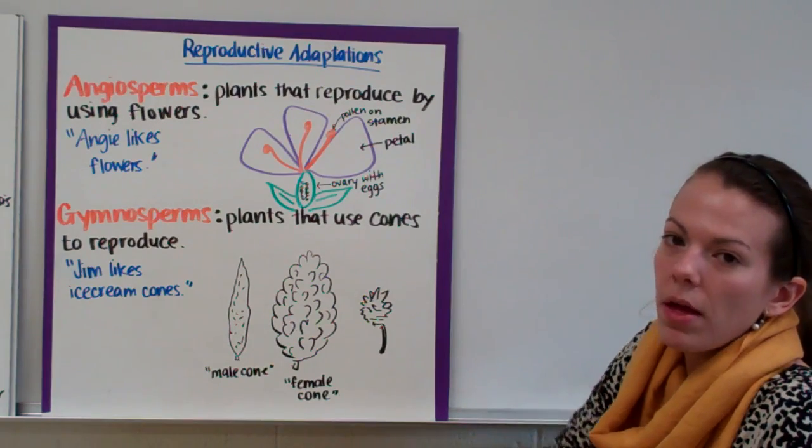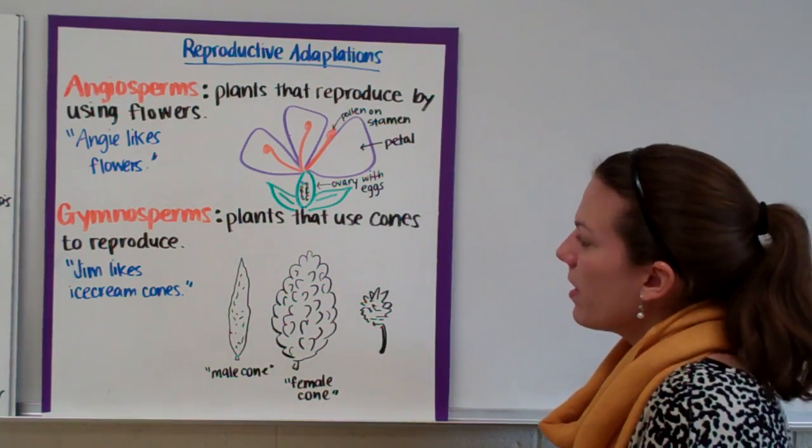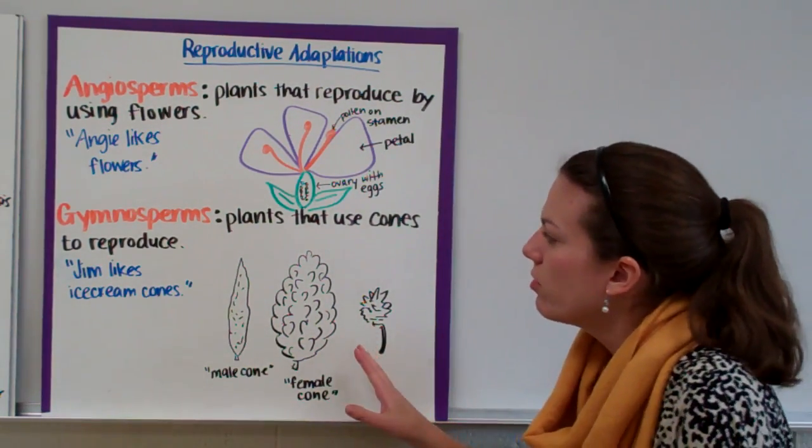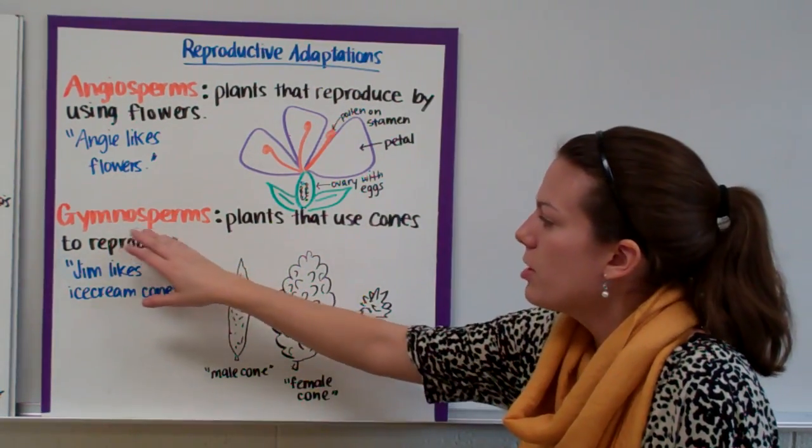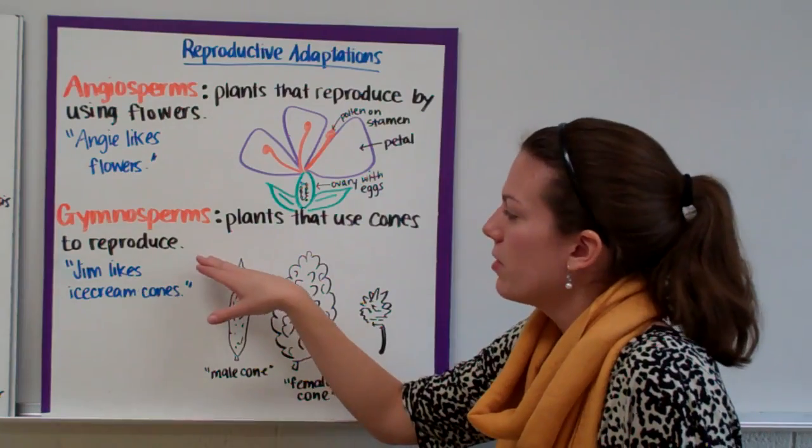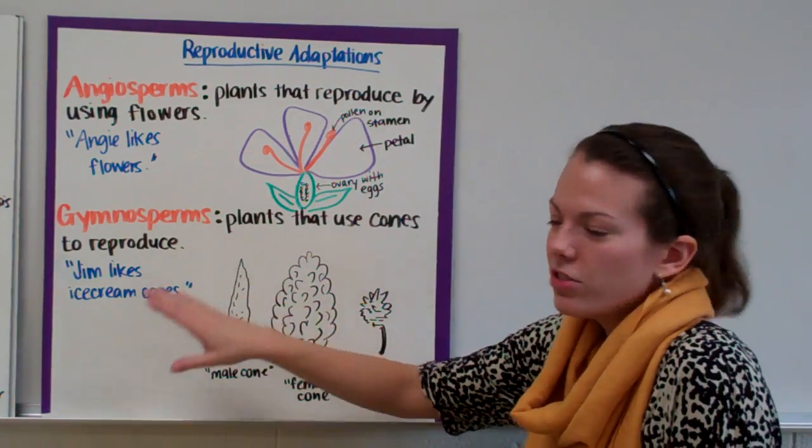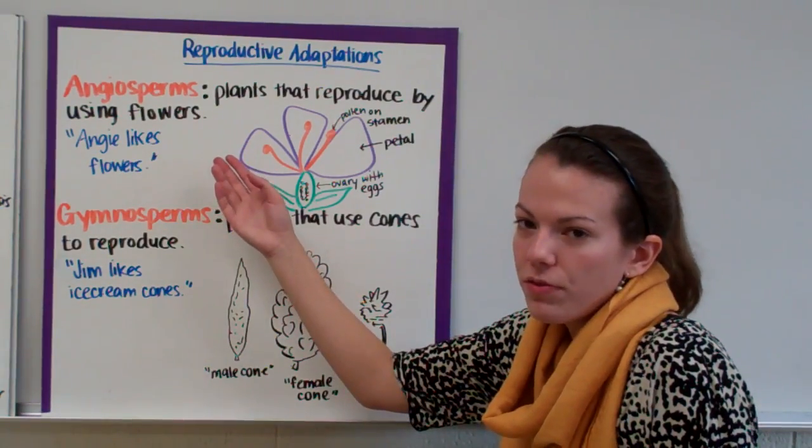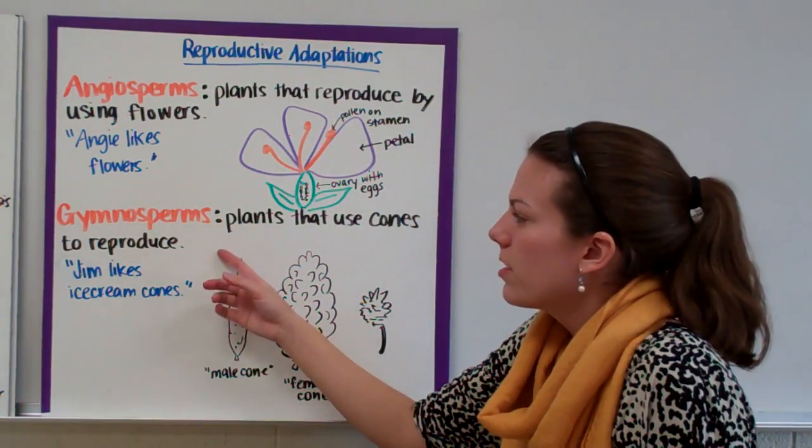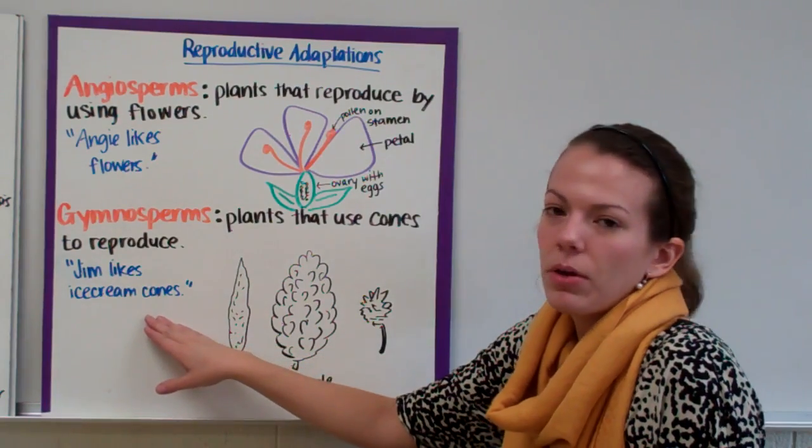Now other plants don't have flowers. Instead they have cones. We call plants with cones gymnosperms. So gymnosperms are plants that use cones to reproduce. Now a way to remember this is Jim likes ice cream cones. So Angie likes flowers, angiosperms are flowering plants. And gymnosperms, Jim likes ice cream cones.